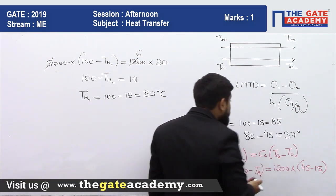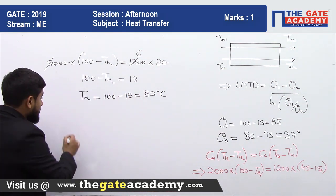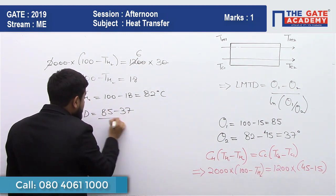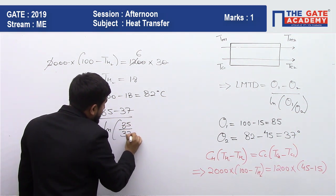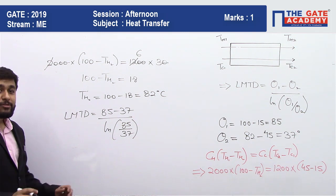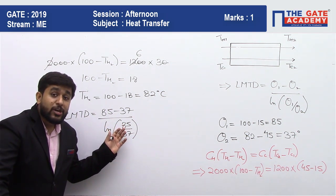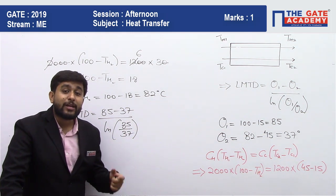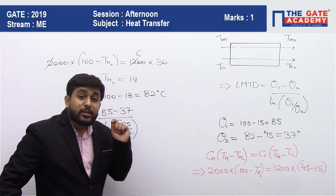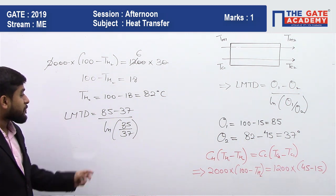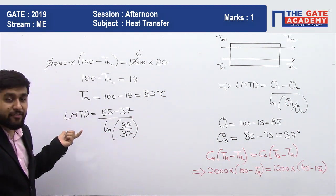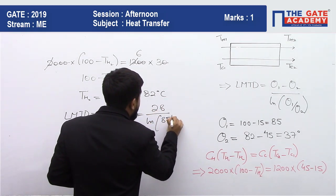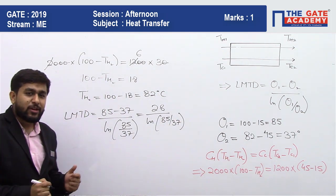Now we have θ1 = 85°C and θ2 = 37°C. So LMTD = (85 − 37) / ln(85 / 37) = 48 / ln(85/37). Note: since θ1 and θ2 are temperature differences, using °C or Kelvin gives the same result. You can use a calculator to get the final numerical value.